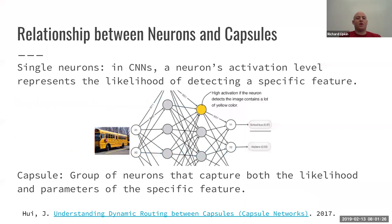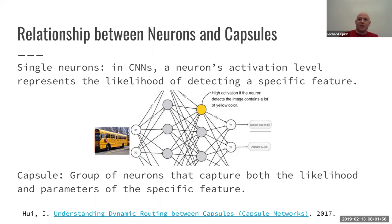First we can discuss, in the most basic sense, what is a capsule as opposed to what a neuron does. A single neuron basically represents the likelihood of detecting just a specific feature — like if we have a school bus, we could say, is there a lot of yellow in this image? Whereas a capsule captures both the likelihood of detecting a feature and also some parameters. It's not just one single activation; there's also the ability to capture some other information.